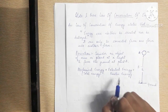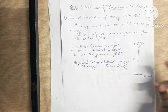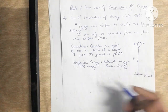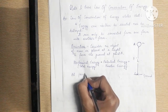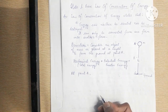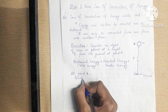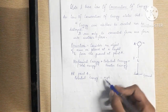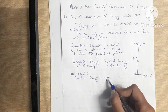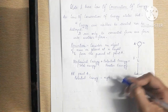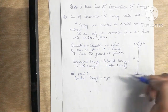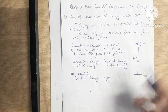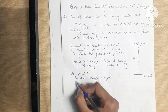Now let's find the total energy at point A. We need to find potential energy and kinetic energy at point A. The potential energy formula is m × g × h — mass of the object times acceleration due to gravity times height. The mass is m, acceleration due to gravity is g, and the height from the ground is H, so potential energy at A = mgH.